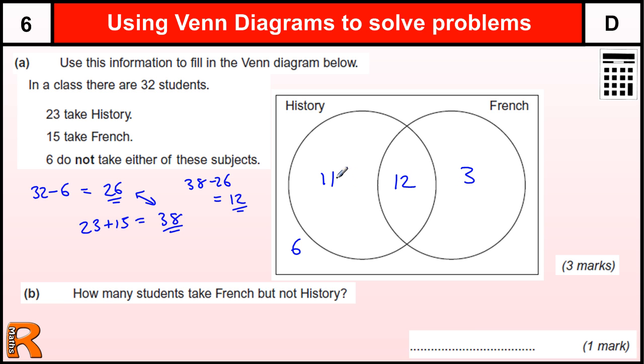OK, so if we add all those up, we get 11 plus 12 is 23 plus 3 is 26 plus 6 is 32. So that gives us our 32 students. And there's 3 marks there.